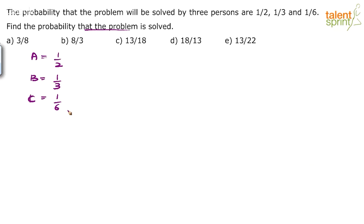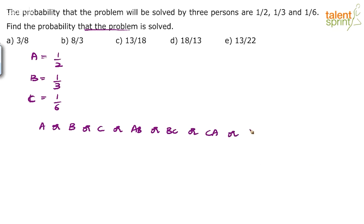There are multiple ways in which the problem can get solved. A can solve it, or B can solve it, or C can solve it, or both A and B may solve it where C doesn't, or B and C can solve it, or C and A can solve it, or all A, B and C can solve it. That gives 7 cases — only A solves, only B solves, only C solves, both A and B, both B and C, both C and A, or all 3. So 1 alone, 2 of them, or all 3 can solve it, and you have to take the probability of all these cases.